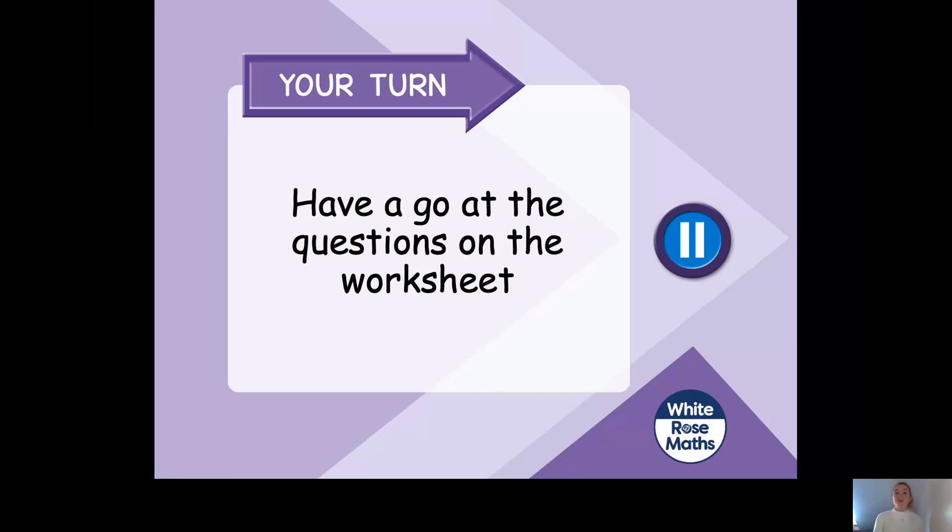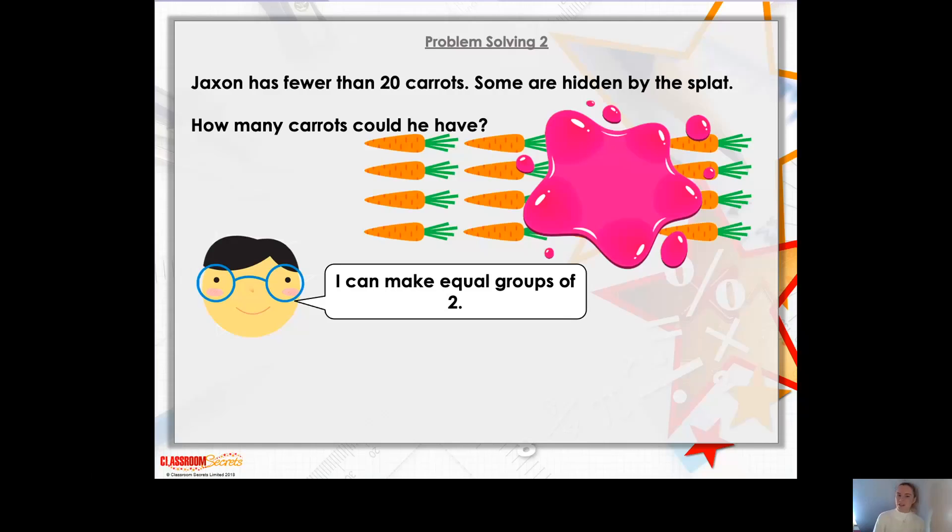OK, so let's move on to some problem solving. Well, here's our first question. It says Jackson has fewer than 20 carrots. But oh dear, can you see? A paint splat has covered some of his carrots. So we don't know how many carrots he has in total. And that's what we need to work out.